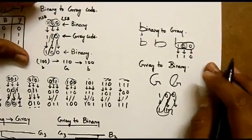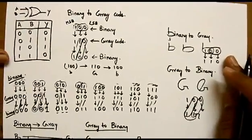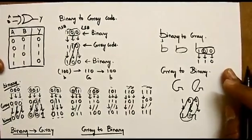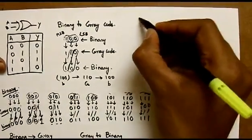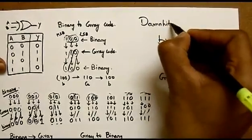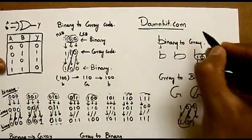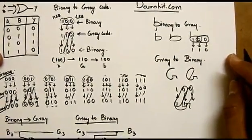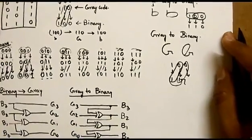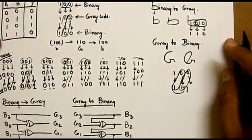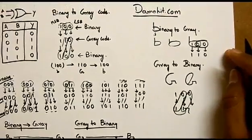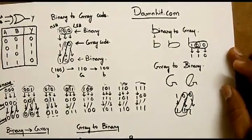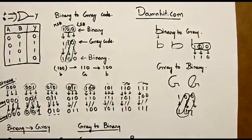So this is how we do conversion from gray to binary and from binary to gray. I will put the scanned copy of this document in the link below for your convenience. Please do visit damheat.com — there are more video lectures available there covering digital logic, transistors, devices, verification methodologies, and VLSI-related topics. Thanks for watching and all the best.